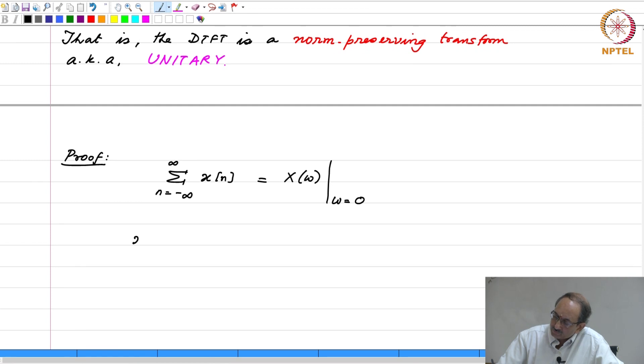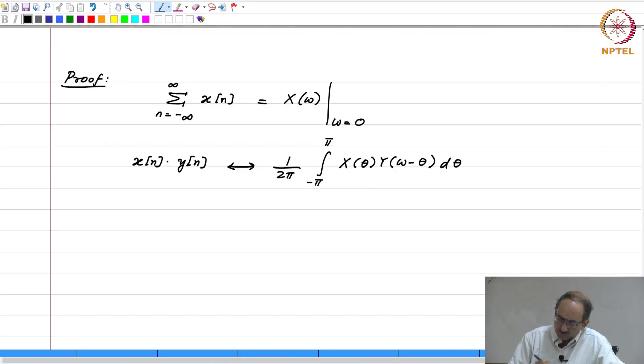And the other property we have seen is x of n times y of n is nothing but 1 over 2 pi, the integral from minus pi to pi of x of theta, y of omega minus theta, d theta. So these two properties will be used.